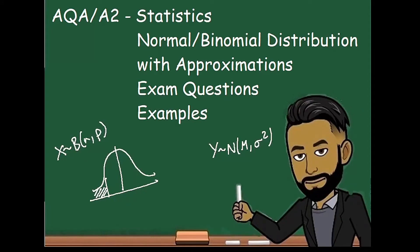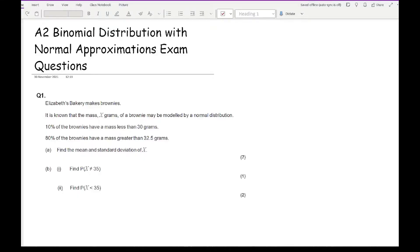Welcome everybody to this latest A2 video on 162 maths. In this video we'll be going over A2 statistics with a focus on normal and binomial distribution with approximations, going through some four exam style questions. The key thing to remember is recognising the wording: normal distribution involves mean and standard deviation for finding probabilities, while binomial distributions involve sample sizes, probability of success, and only two outcomes — success or failure.